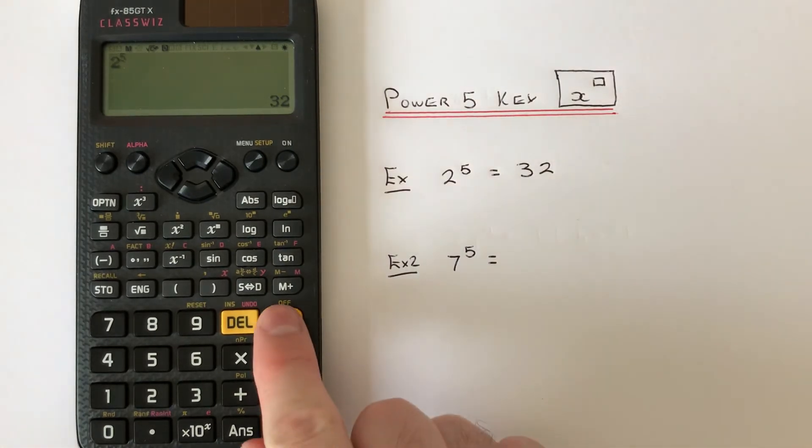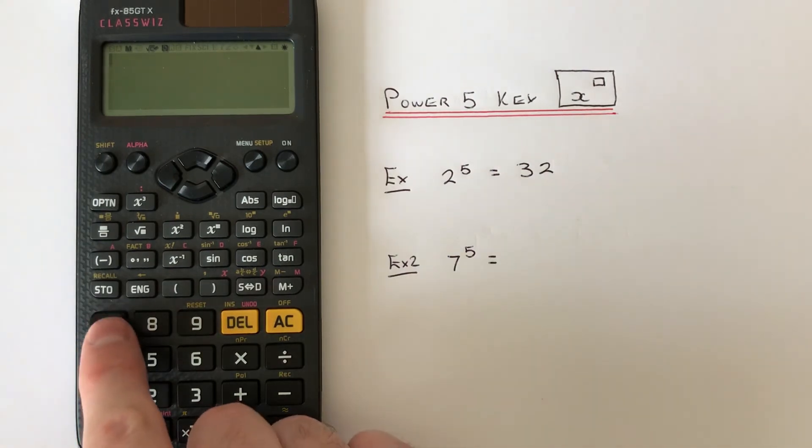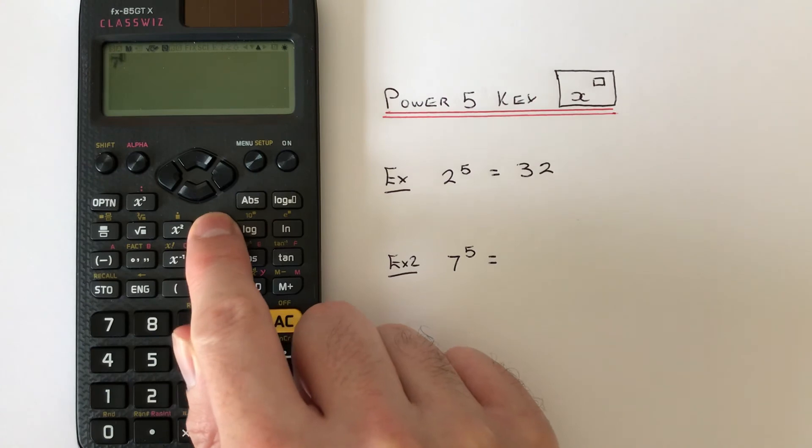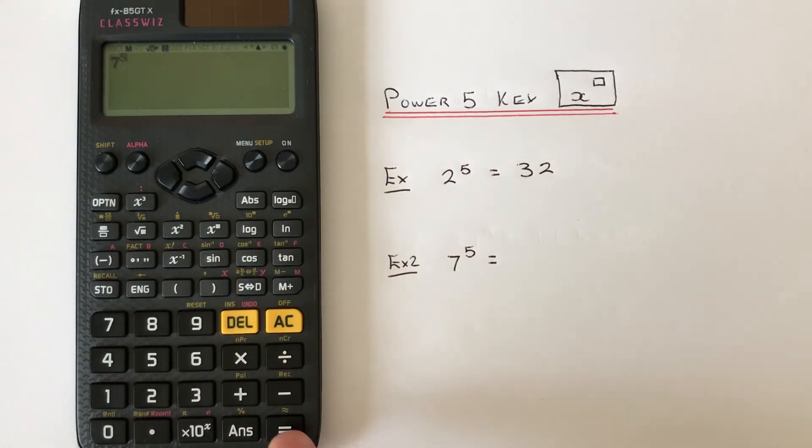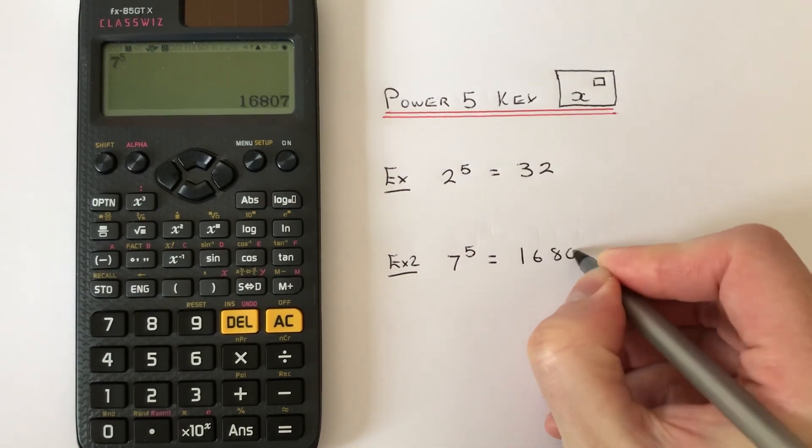Let's look at this second example. This time we've got 7 to the power of 5. So press 7 and the power key, then 5, and press equals, and we get the answer 16807.